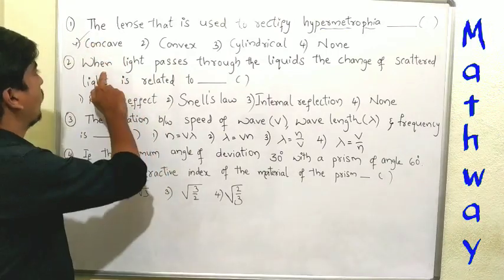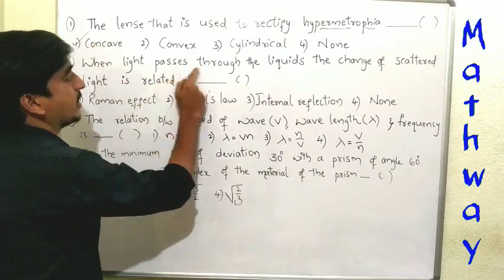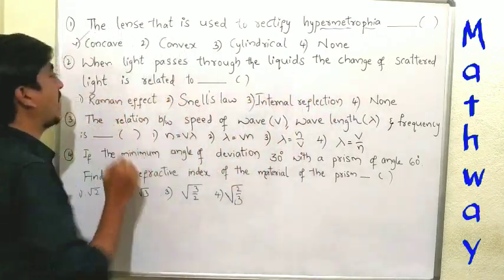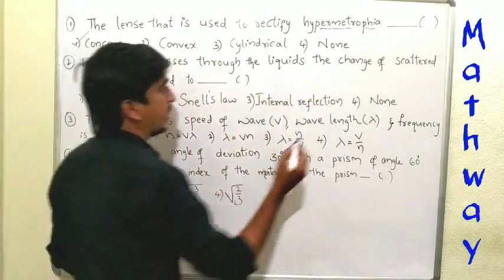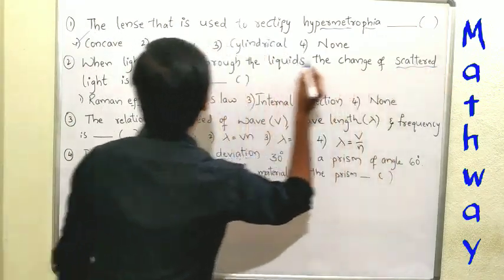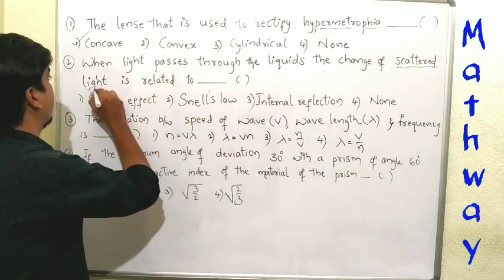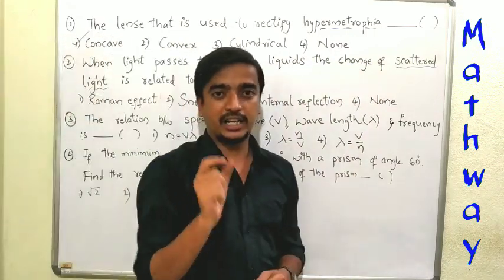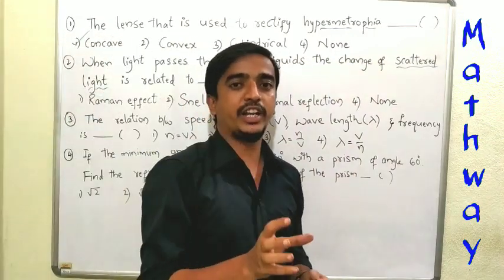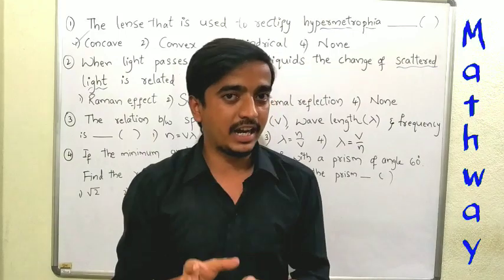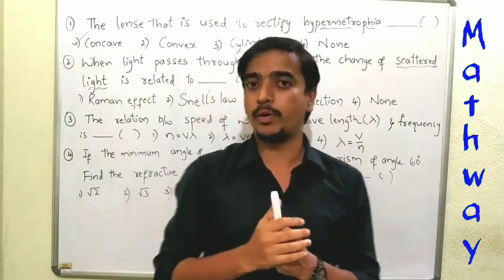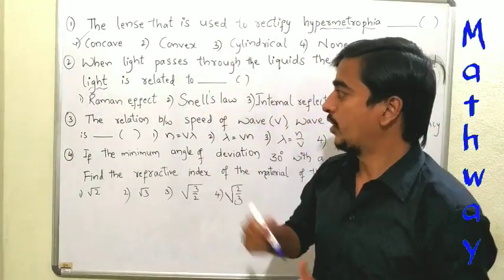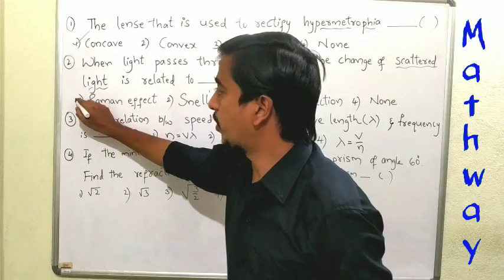Second question: when light passes through liquids, the change of scattered light is related to what? The concept is Raman. The study of scattered light — he got the Nobel Prize for it. So scattered light is related to the Raman effect. Option one.